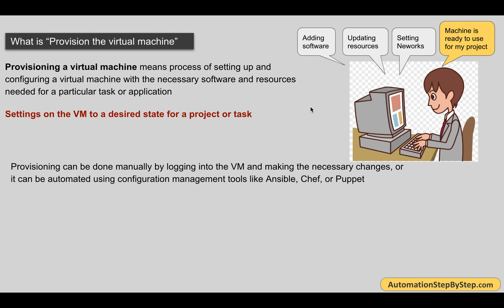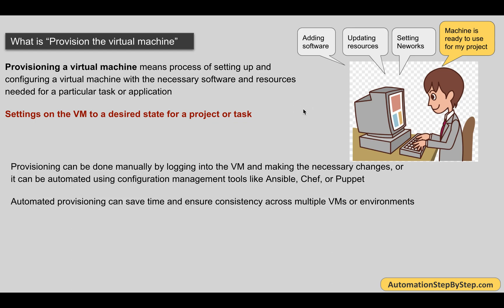Provisioning of a virtual machine can be done manually — a person can log into the machine and do all the steps manually like installing software, updating resources, setting up network connections, etc. But that will be very time consuming, error prone, and you cannot duplicate it or do provisioning on multiple machines all at once. For that, we use configuration management tools like Ansible, Chef, Puppet, etc. Automated provisioning can save a lot of time and will be a very durable and efficient process.